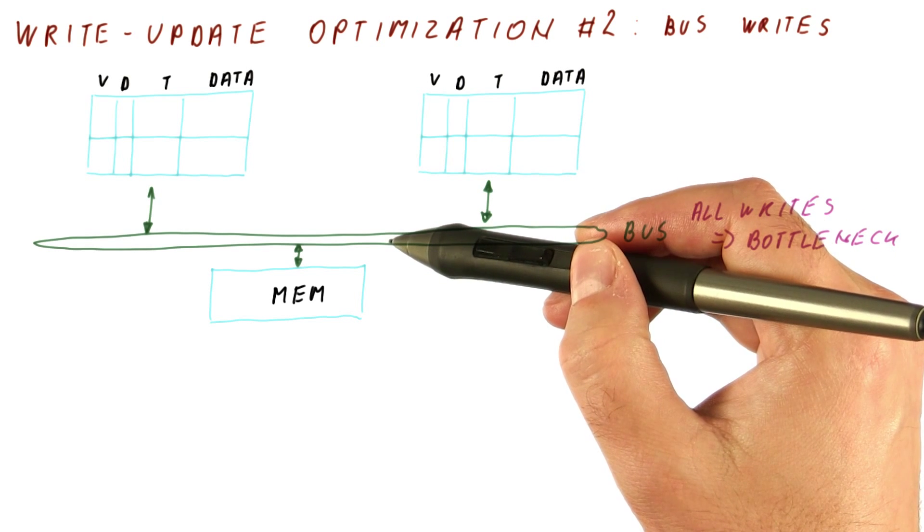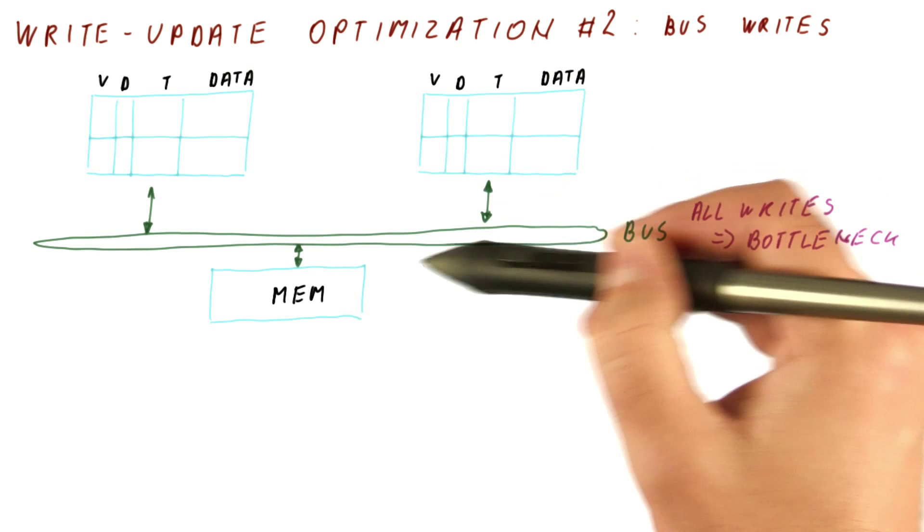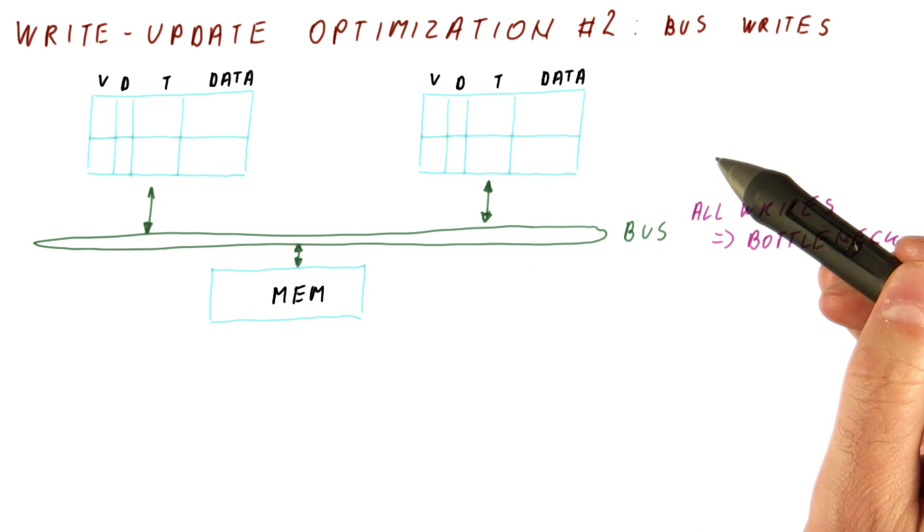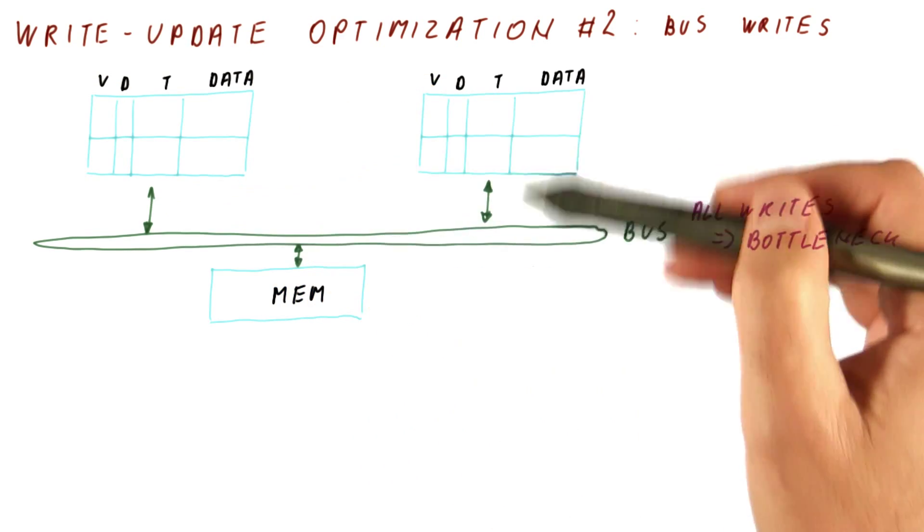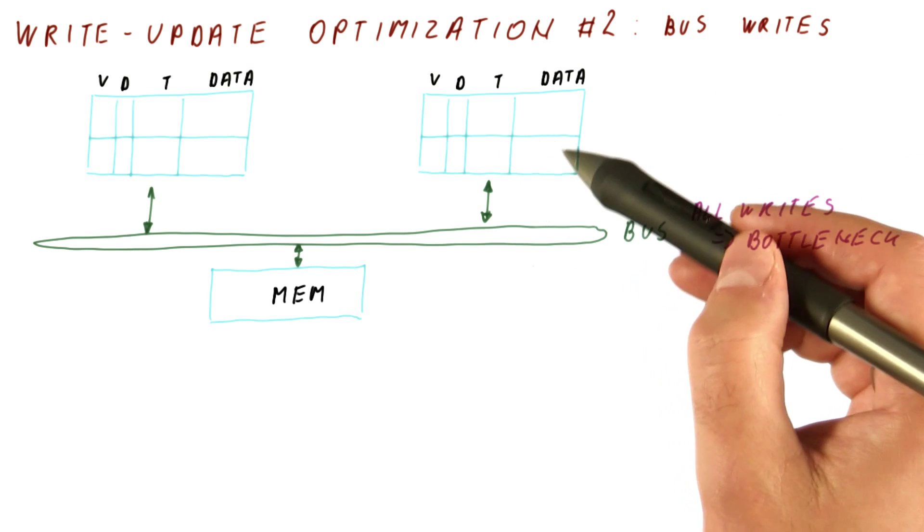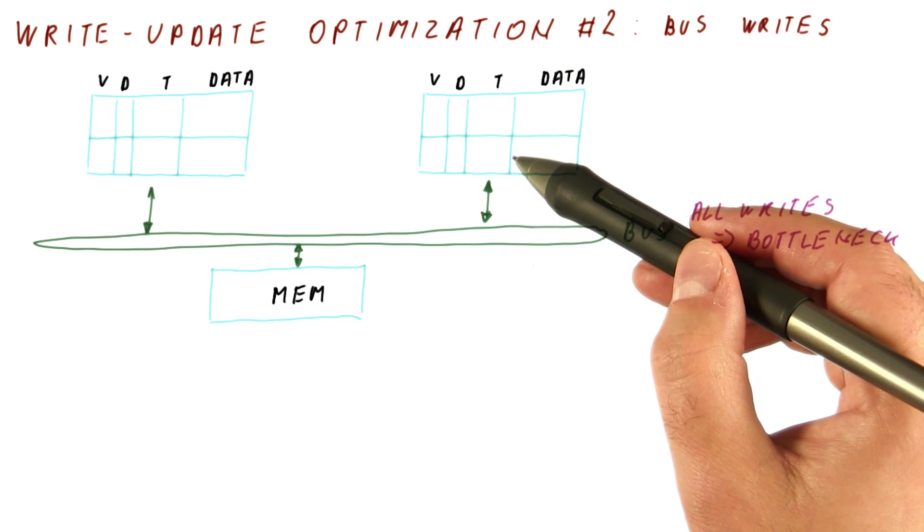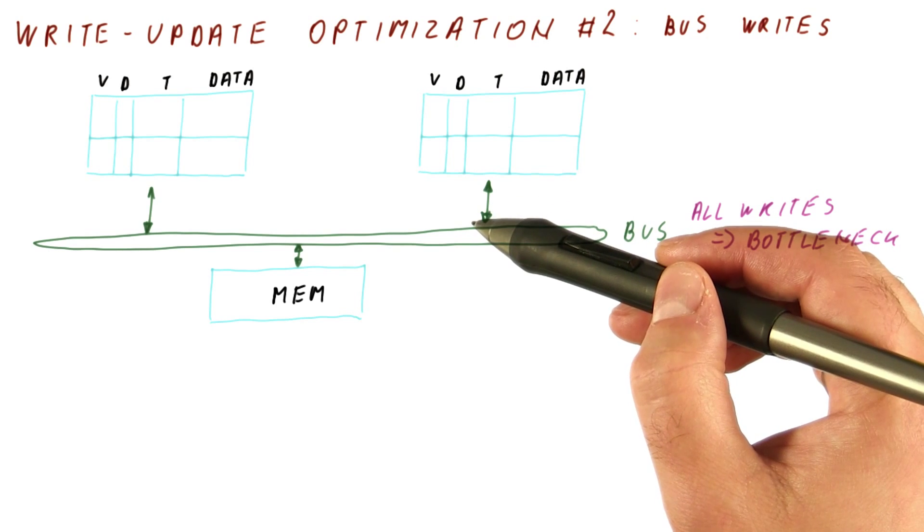The bus broadcasts for writes that are needed to update other copies of the data need to happen because this is a write-update protocol. It needs to update other copies of the data. But the optimization we can do is about the writes that do not need to update anybody.